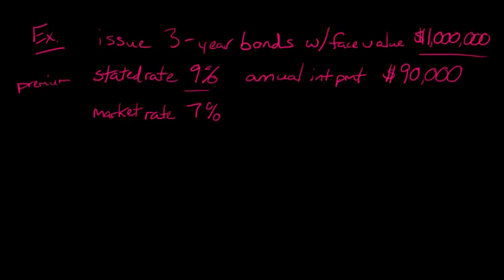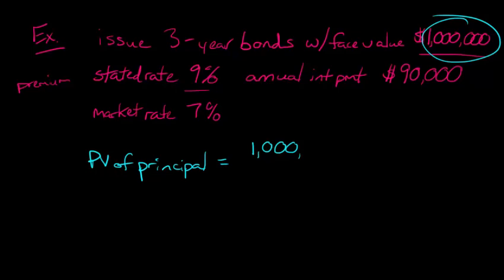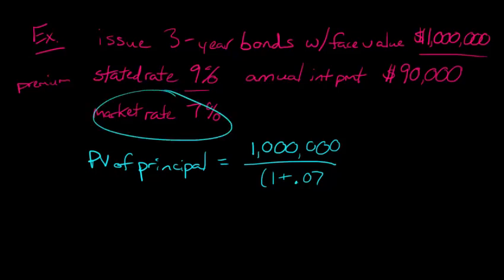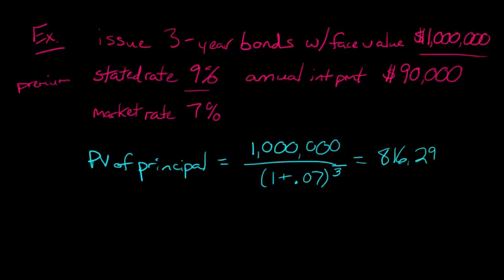As I mentioned, we're going to take the present value. If you don't understand present value, I suggest you check out my time value of money videos. The present value of the principal — this $1,000,000 face value — is $1,000,000 divided by (1 plus the market rate) to the number of periods. We're using the market rate here, not the stated rate; the stated rate is only used to determine how much interest is paid. With three periods and a 7% market rate, that gives us $816,298.